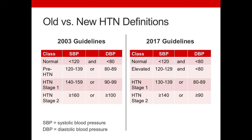Stage 1 hypertension would be at 130 to 139 systolic or 80 to 89 diastolic. At these levels individuals are at higher risk for the comorbidities of hypertension. There are many studies that show the benefit from reducing blood pressure below these levels, and this is one of the reasons that this change was made.